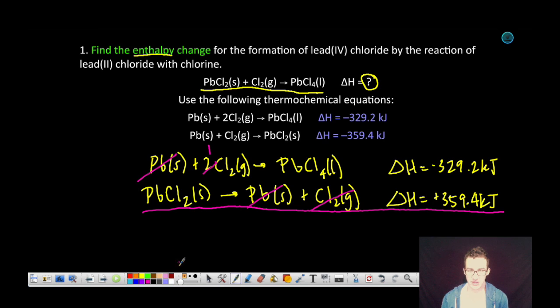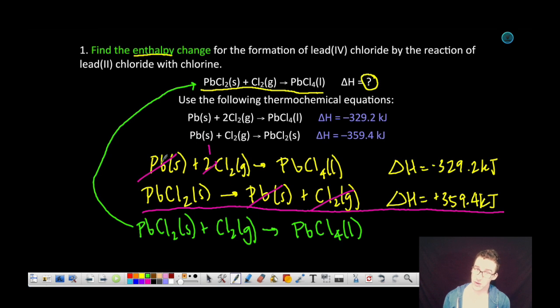And so ultimately, I'm left with overall on the reactant side: PbCl₂ in the solid state plus one mole of chlorine gas form one mole of lead(IV) chloride in the liquid state, which is the reaction that I'm looking for. Again, note that anything on the reactant side will cancel out anything on the product side in a second equation.